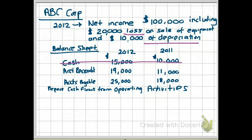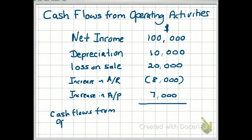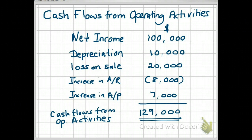A lot of companies will have many more current assets and current liabilities than shown in this example, so you would do that analysis for every single current asset and every single current liability, other than cash. Now that we've taken into account all items from the income statement and balance sheet, we can figure out cash flows from operating activities. Adding everything up, you would end up with $129,000.